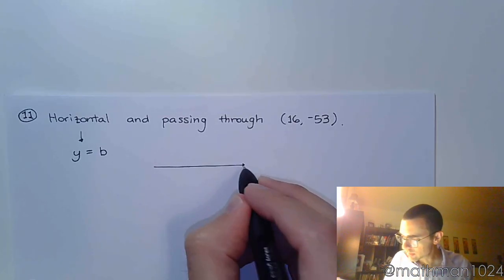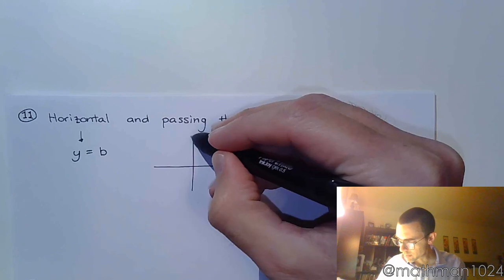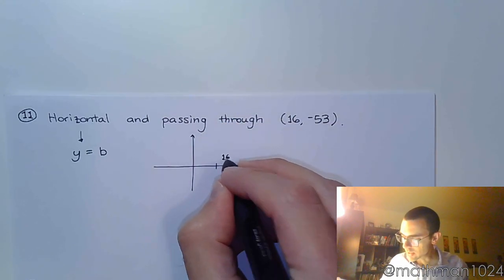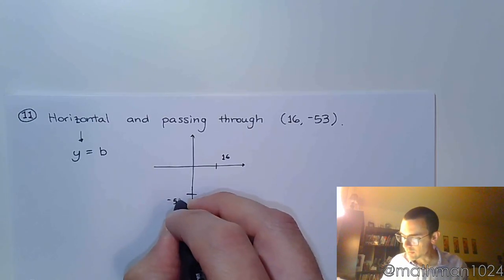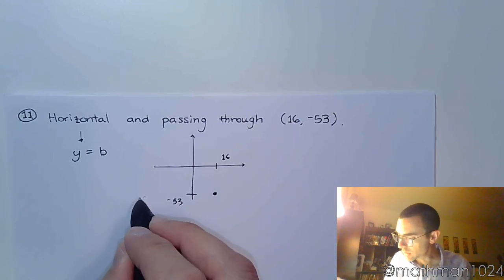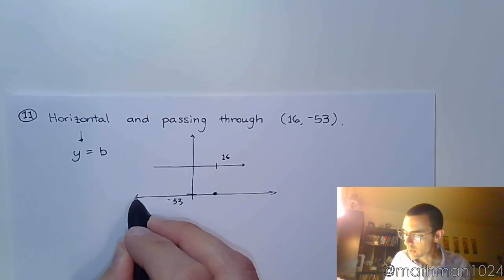If you were to draw this out and you were to look at 16, negative 53. So let's say this is 16 and somewhere down here this is negative 53. So there's your ordered pair. And you want to be a horizontal line going through that guy.